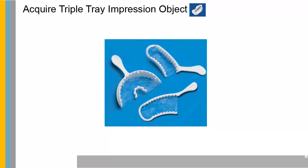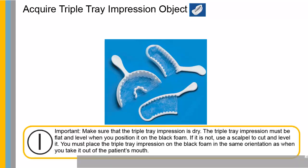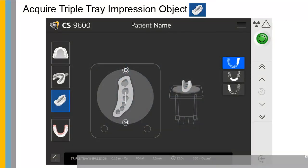Click to launch the triple-tray acquisition. Make sure that the triple-tray impression is dry. The triple-tray impression must be flat and level when you position it on the black foam. If it is not, use a scalpel to cut and level it. You must place the triple-tray impression on the black foam in the same orientation as when you take it out of the patient's mouth. Select the triple-tray impression acquisition mode. See the on-screen illustration on how to position impressions at the center of the black foam. For posterior restorations, place impressions with the mesial surface at the front end of the black foam.